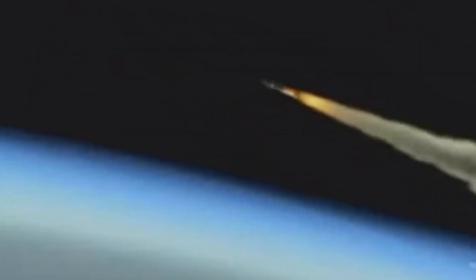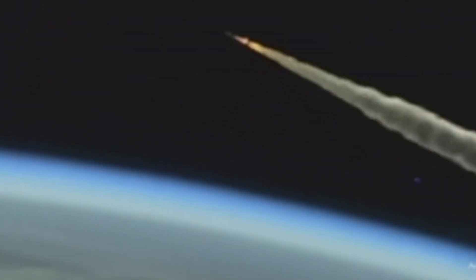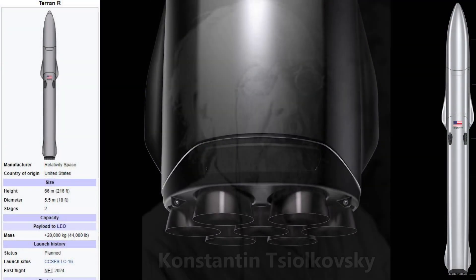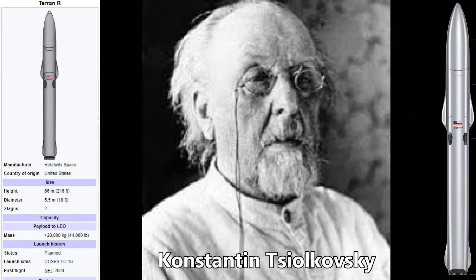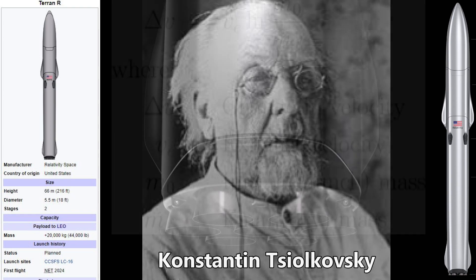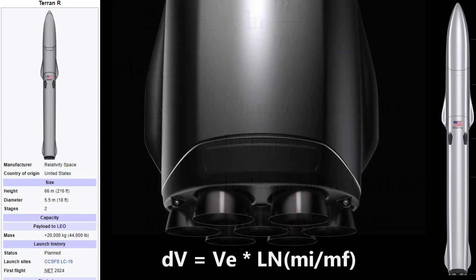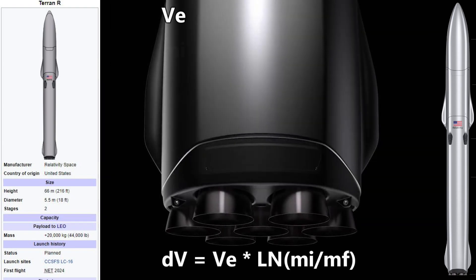Back to the Terran R and delta V. Konstantin Tsiolkovsky has credit for developing the rocket equation. Delta V equals the exhaust velocity of your rocket engine, times the natural log of the initial mass over the final mass. This equation, if we know the exhaust velocity of our rocket engines and the initial and final mass, will give us our delta V.